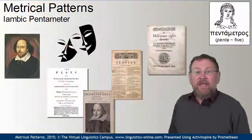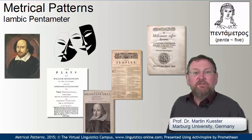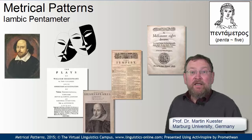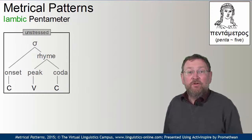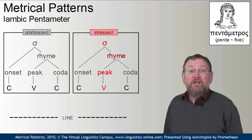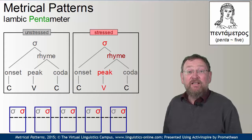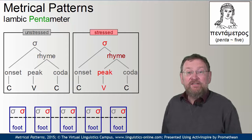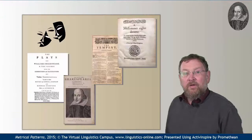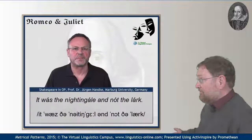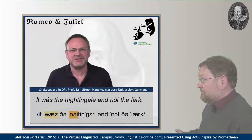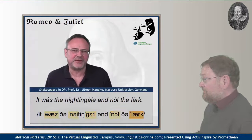Let's start with the iambic pentameter. This meter is often presented in Shakespearean plays. It is a meter where an unstressed syllable is followed by a stressed one. Each line contains five of these disyllabic units, also called feet, hence the term pentameter. Here's an example from Romeo and Juliet: 'It was the nightingale, not the lark.'